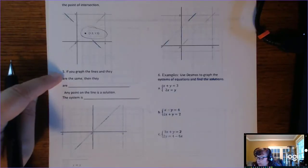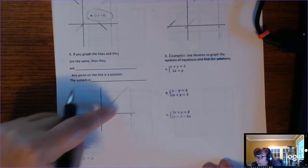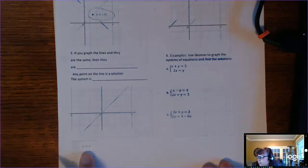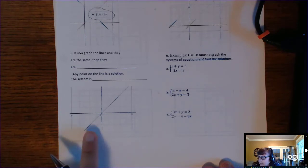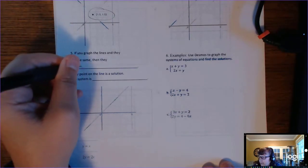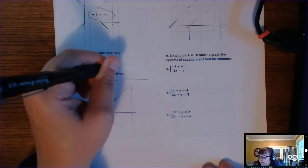If you graph the lines and they're the same, it's hard to see what's going on, but it looks like one line. This comes from Desmos — I typed in y equals x and 2y equals 2x. They're really the same line because the second equation is just the first multiplied by 2 on both sides. If the lines are the same, they're called consistent because they at least have solutions, but they're also called dependent.